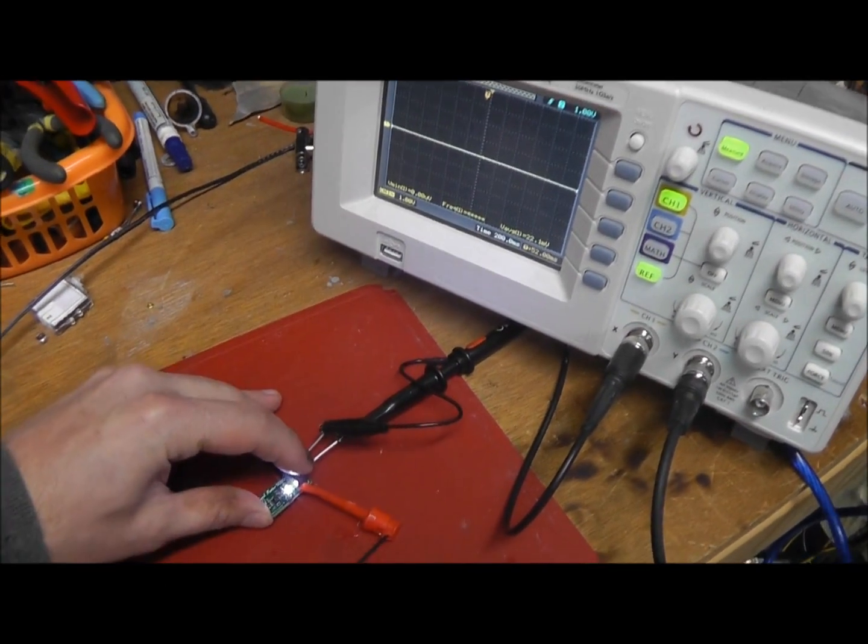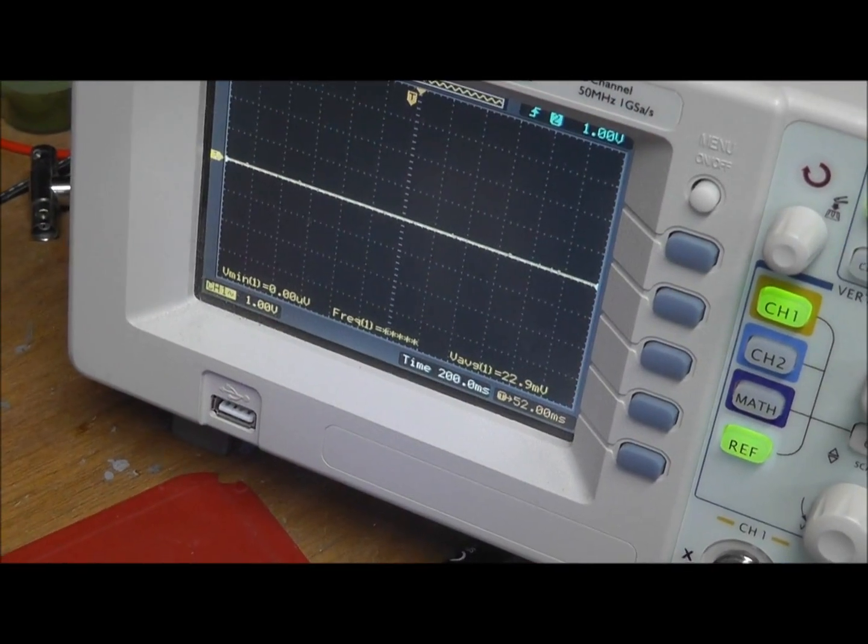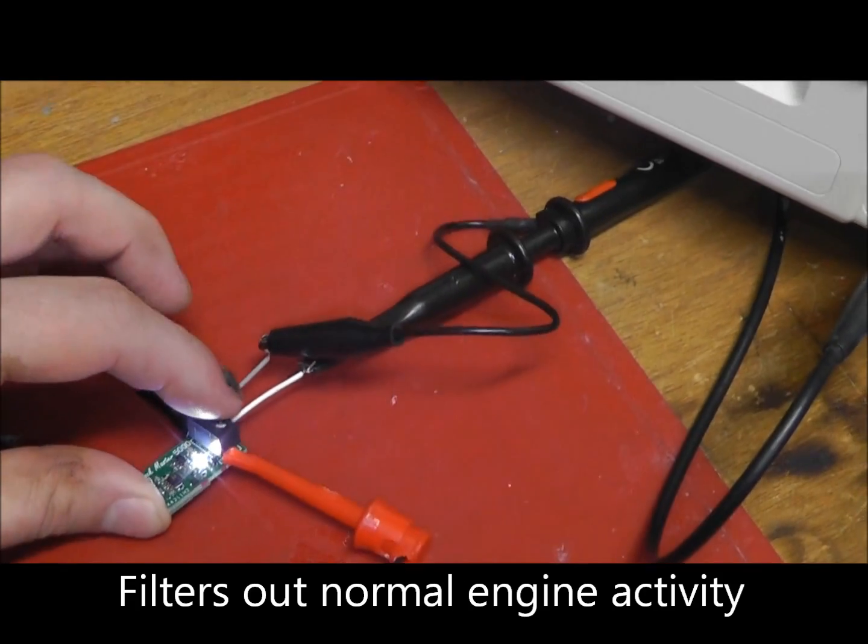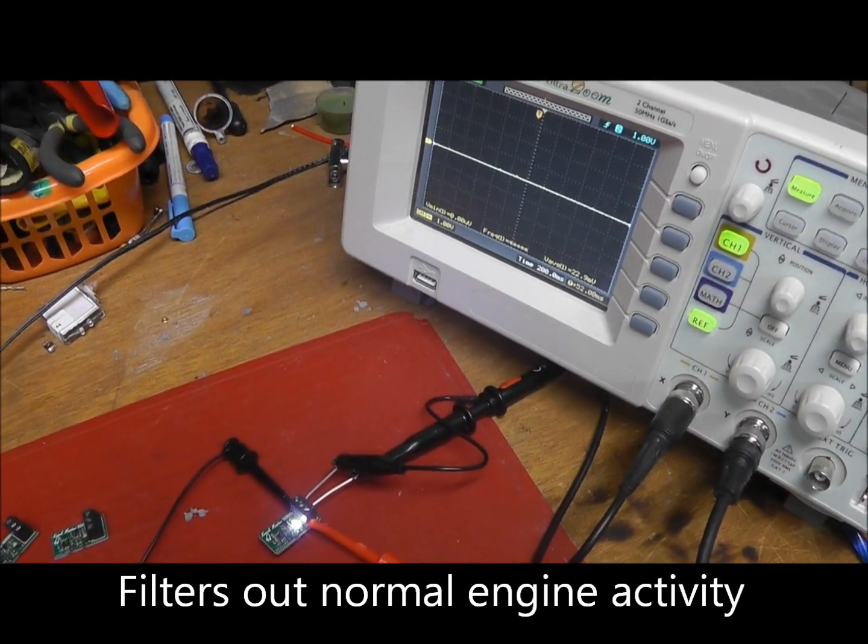If I squeeze this at a low frequency, I'm applying strain to the board, but nothing's happening here on the scope. You can see there's barely any reading going on here for me squeezing this, which means that we filter out a lot of the low frequencies, which is desirable.